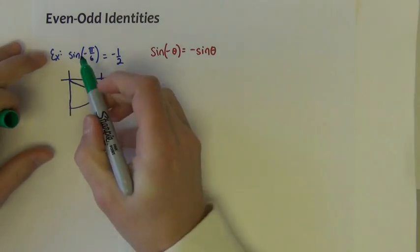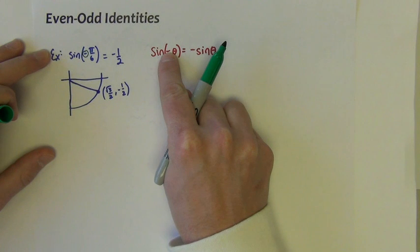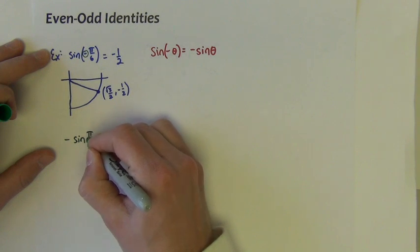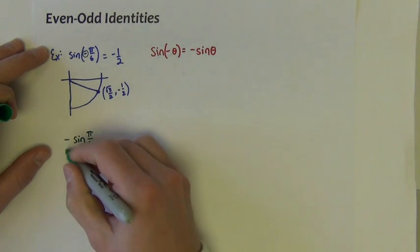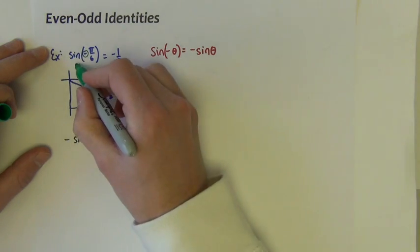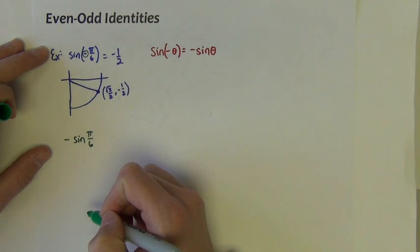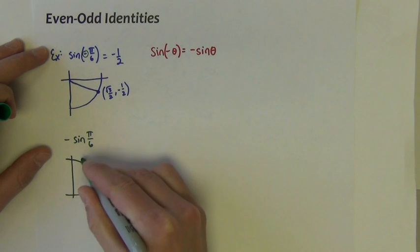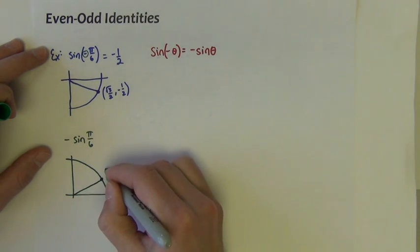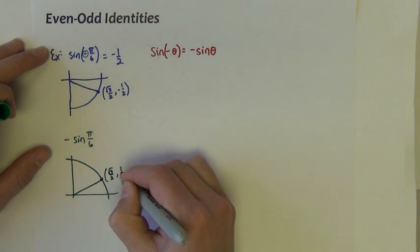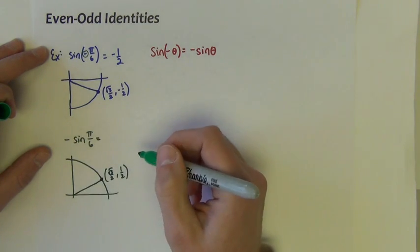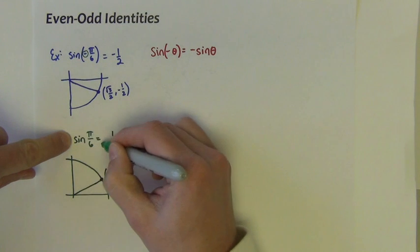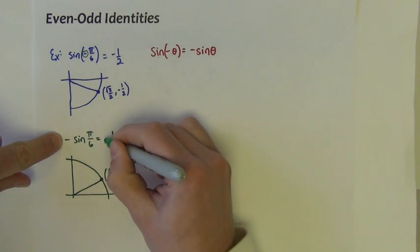This identity says that the sine of a negative angle is the same as negative sine of that angle. So let's see if this expression is equivalent to a value of negative 1 half. Looking at the unit circle again, pi over 6 is the point square root 3 over 2 comma 1 half. So the negative sine of pi over 6 — the sine of pi over 6 is 1 half, and the negative of that is negative 1 half.